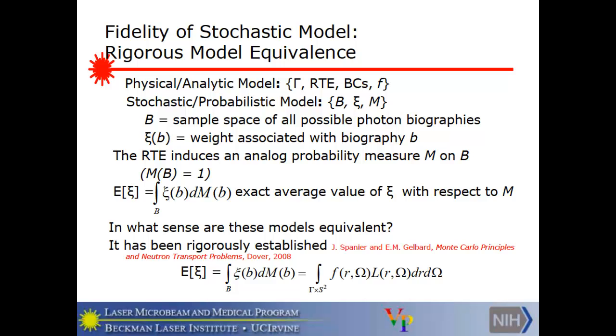Now, there are infinitely many of them, and so each probability is measured zero. Each one occurs with probability measure zero. But you have to talk about a probability density function, which has to be integrated to give you the measure associated with a collection of photons. The fact that it's a probability measure means that the measure of the whole space is one. The theoretical expected value of a random variable is the integral with respect to the measure. It's just the first moment over the sample space. So it's the exact average value of C with respect to the generating measure. And in what sense, I ask, are these models equivalent? Well, this line of equalities tells you what you need to know. They're equivalent if the expected value, the theoretical expected value, which is this, integration over b, the probability space, is the same as the integration over the model space, the gamma cross S2. Gamma is the physical phase space, S2 is the sphere of unit directions, of the multiplying weighted function applied to the radiance.